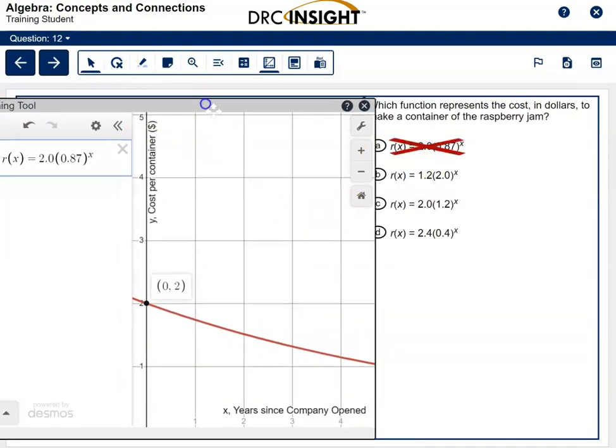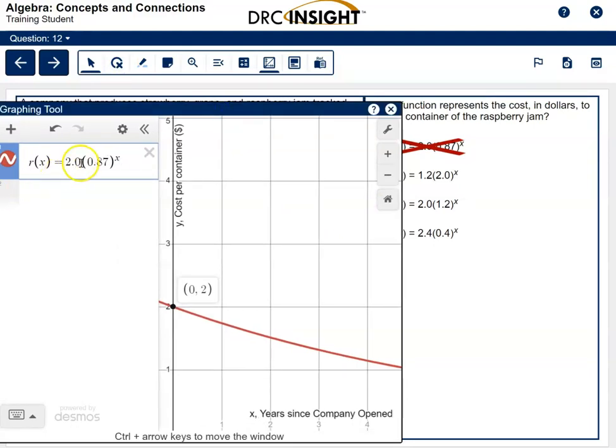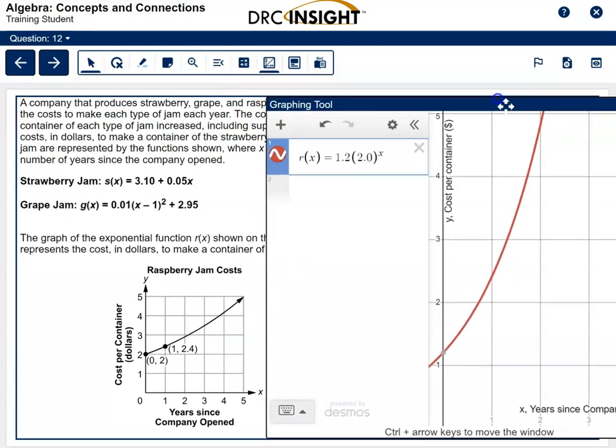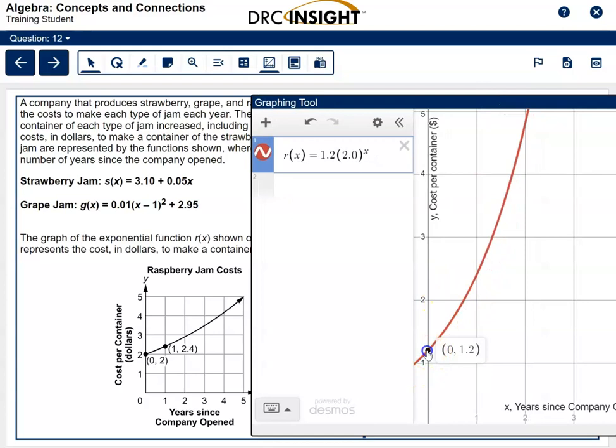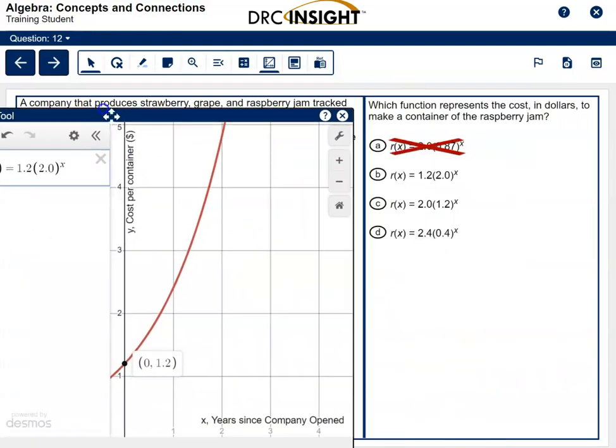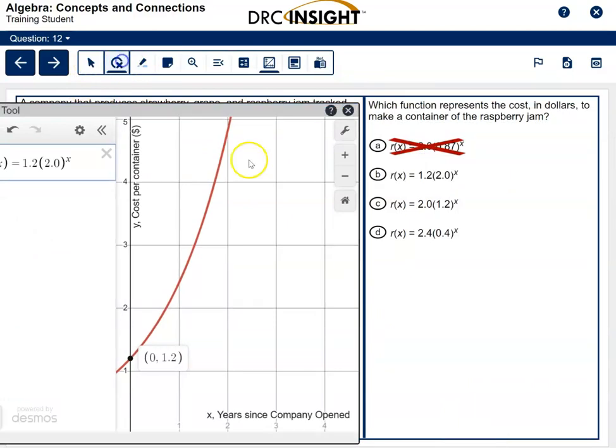There's 0, 2, but nothing else is right, so that one's not going to work. So let's get rid of that one. I think I'll do the answer eliminator for that one. The next one is R of X is equal to 1.2. So let's change this to 1.2, and the base is not 0.87. It's 2.0. This one is increasing, but it's not looking to me like this one's working. I don't have 0, 2, so that's right off the bat wrong. And you can actually press and hold to see these numbers, and these aren't working either. At 1, it's supposed to be at 2.4. That's true, but at 0, it's not at the right number. It's supposed to be at 0, 2. So that one's wrong as well. So I'll use the answer eliminator and cross that one out.